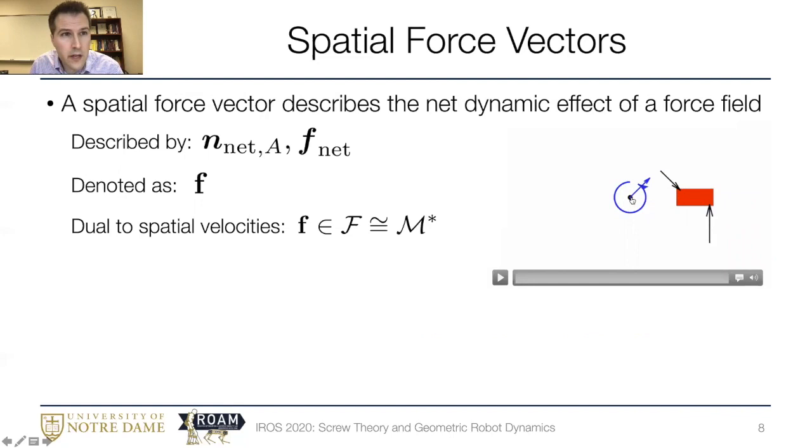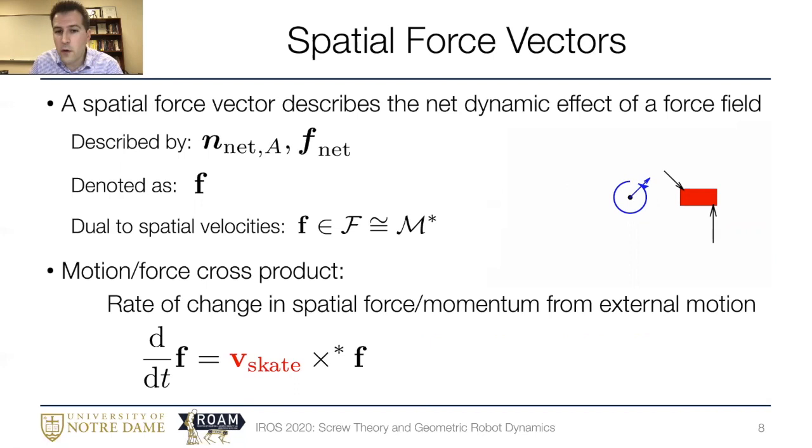Now building on this example let's imagine I've got these forces I can look at the net force and the net moment about some point and then I can put this in motion here. And of course as the skateboard moves and carries along that force field the net dynamic effect is changing. So we'll define a spatial cross force cross product similar to before that gives the rate of change in a spatial force or momentum from external motion. So here the time rate of change in spatial vector f is given by the velocity of the skate the thing that's carrying along that force field crossed with the spatial force itself. And here this star represents that it's a spatial cross product and that it has to do with forces. It's different from the one before.